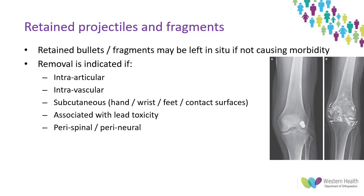As seen in some of these radiographs, retained fragments may be widely spread and impossible to remove. Where fragments are large enough for removal, this is not required unless there are specific indications. Perispinal or perineural bullets and fragments may need removal as outlined previously. An intra-articular bullet or fragment can lead to joint destruction, progressive fragmentation of the projectile, and lead toxicity.